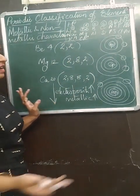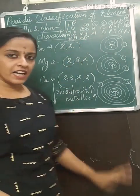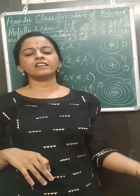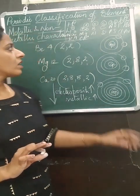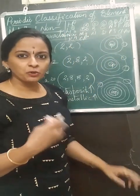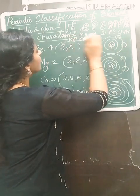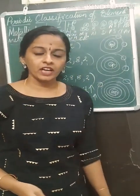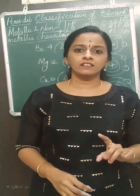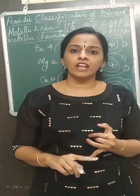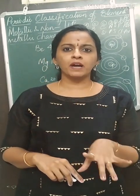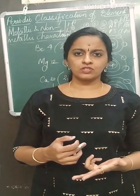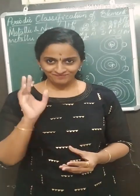As you go down the group, metallic character increases and non-metallic character decreases. As you go from left to right, metallic character decreases and non-metallic character increases. The most electronegative element is fluorine, and for the third period it is chlorine. The most electropositive elements are on the left side of the modern periodic table. This completes the periodic trends in the modern periodic table. Remember the nuclear pull concept and everything will be clear. Next we will discuss the exercise questions related to this chapter.